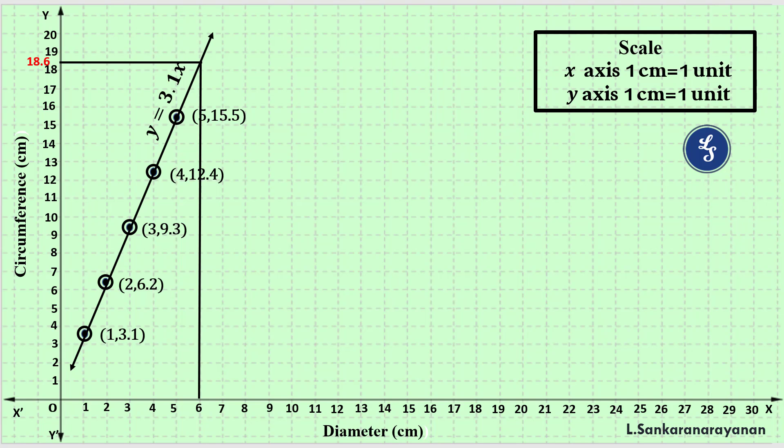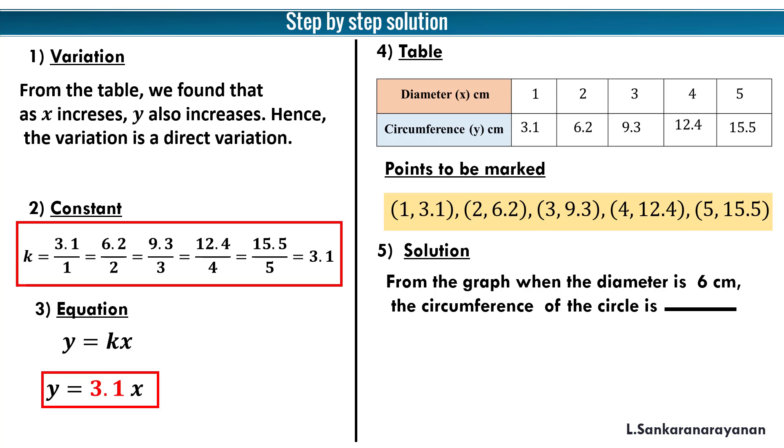When the diameter is 6 centimeter, the circumference is 18.6 centimeter. Finally, we are going to write the answer in the solution step. Here we have to fill up this: 18.6 centimeter. That's all, very, very simple and easy graph.